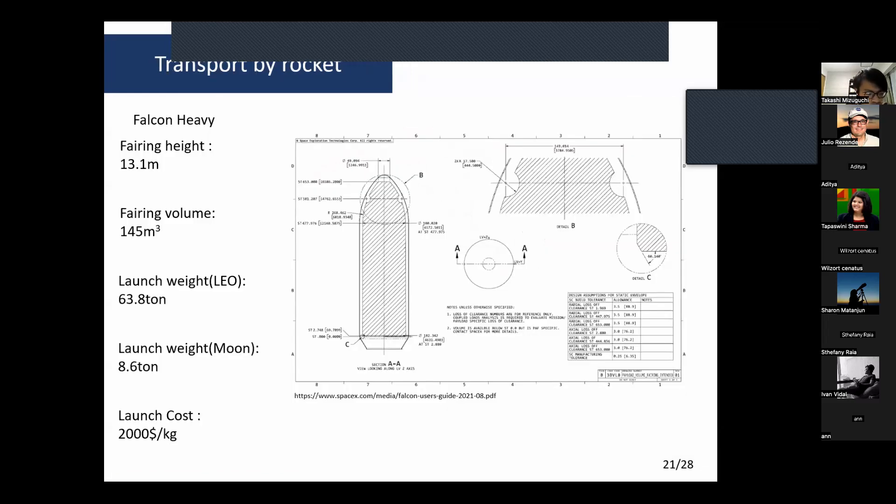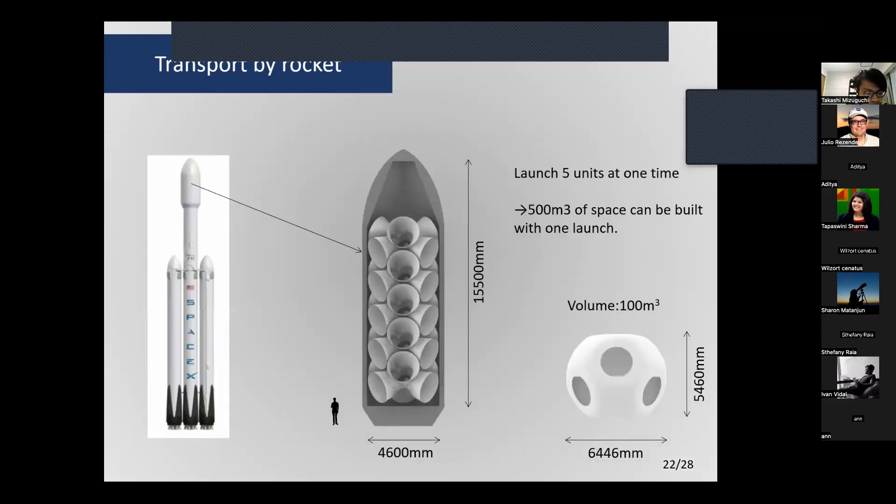For launch, Falcon Heavy is used due to its launch cost and the size of the payload fairing. These modules are made to fit the Falcon Heavy's payload fairing. It launches five units at one time, and 500 cubic meters of space can be built with one launch.